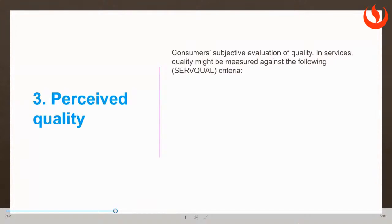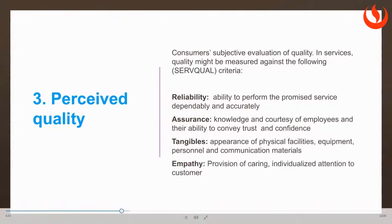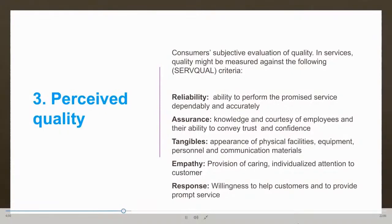Another thing we need to establish in order to build consumer brand equity is creating the perception of perceived quality. Perceived quality is how consumers subjectively evaluate a product or service quality. Quality can be measured against the following criteria: reliability, assurance, tangibility, empathy, and responsiveness. Please take time to read what each criterion means. These are predominantly used in relation to evaluation of service quality, but can also apply to products.